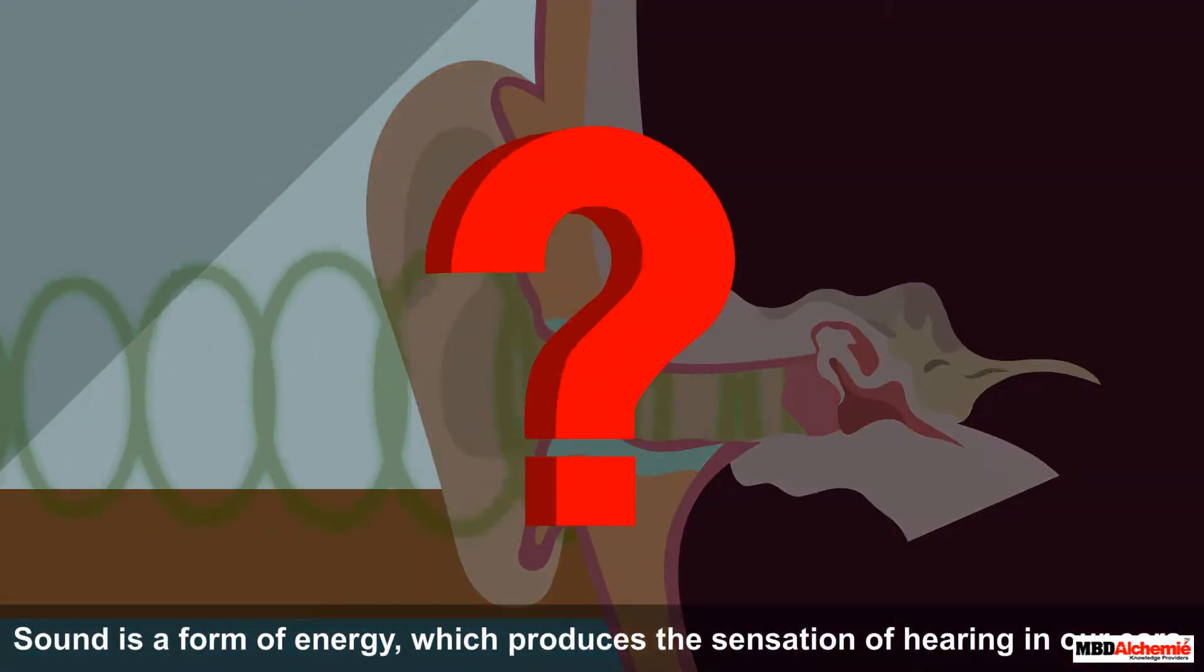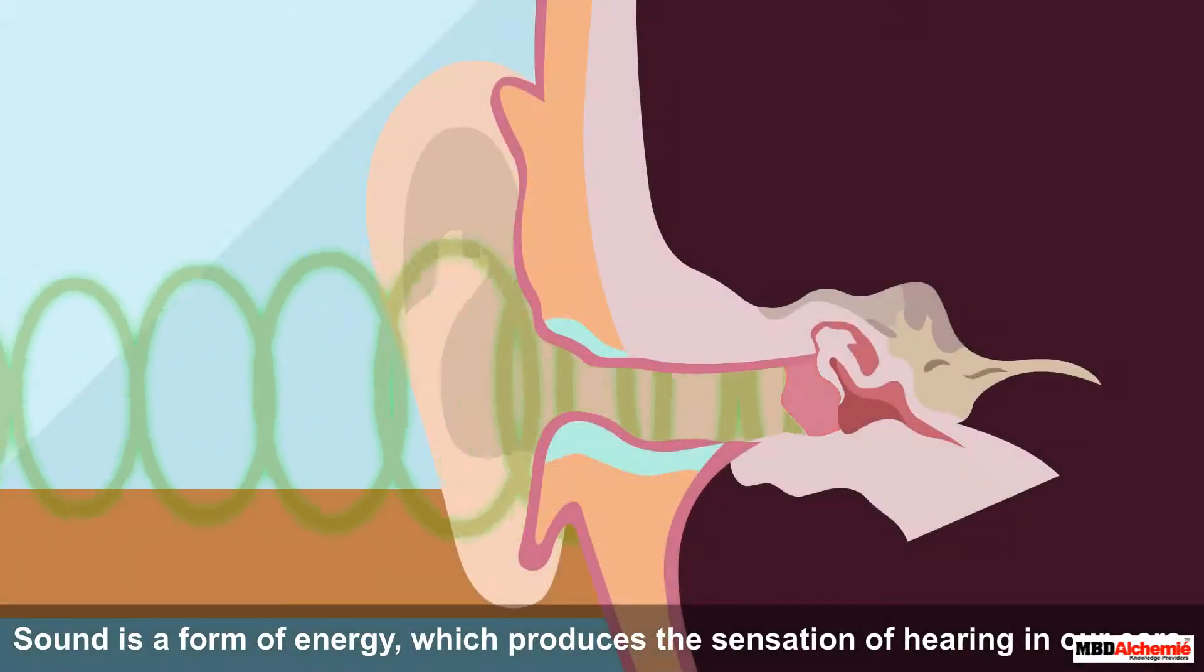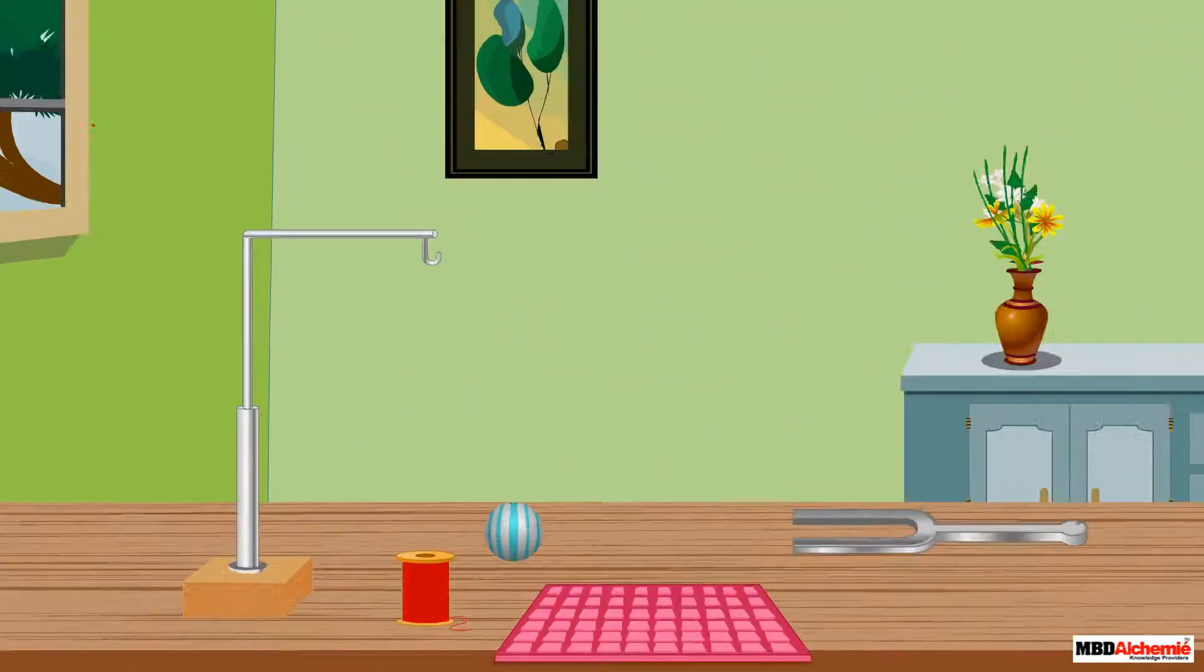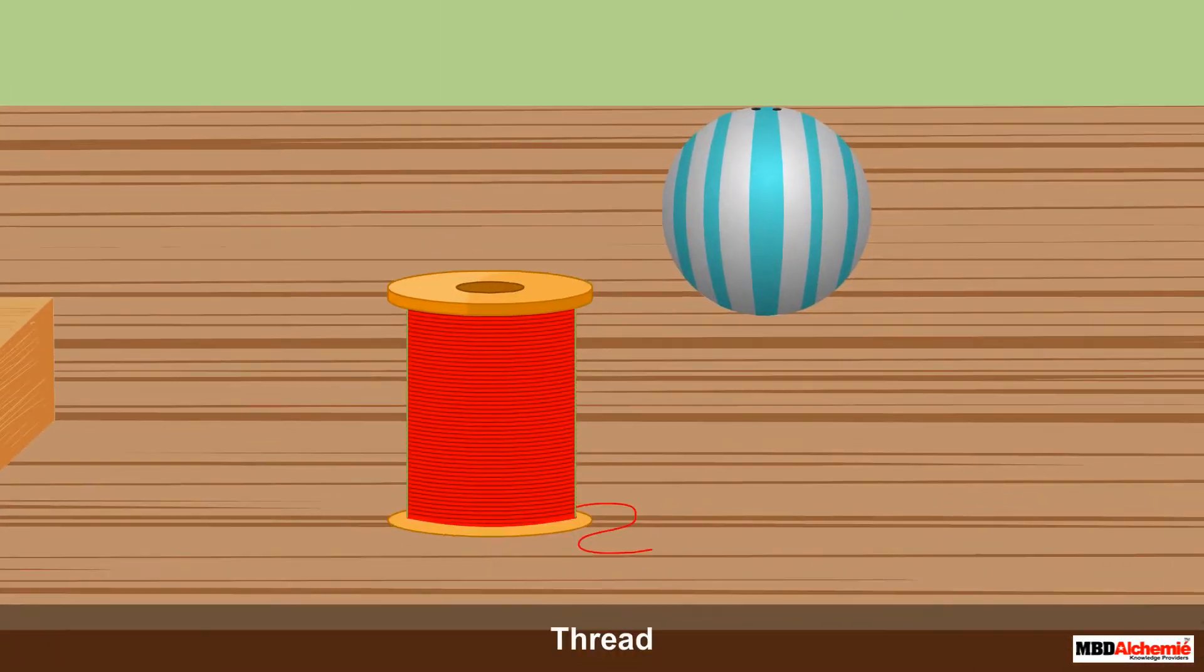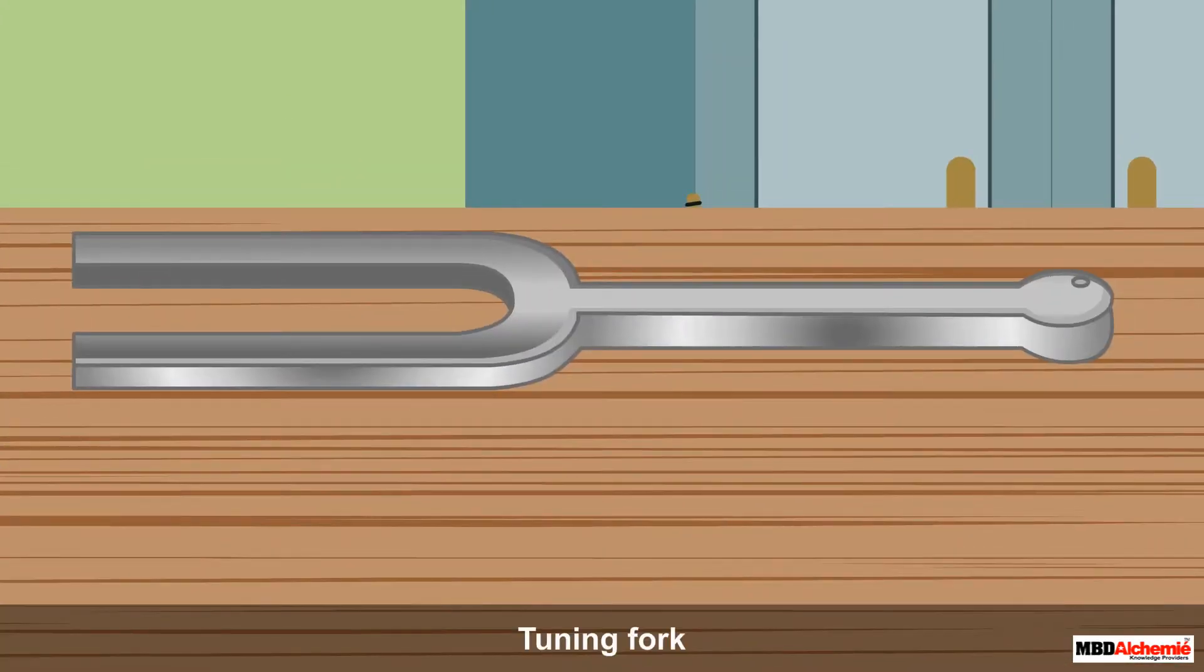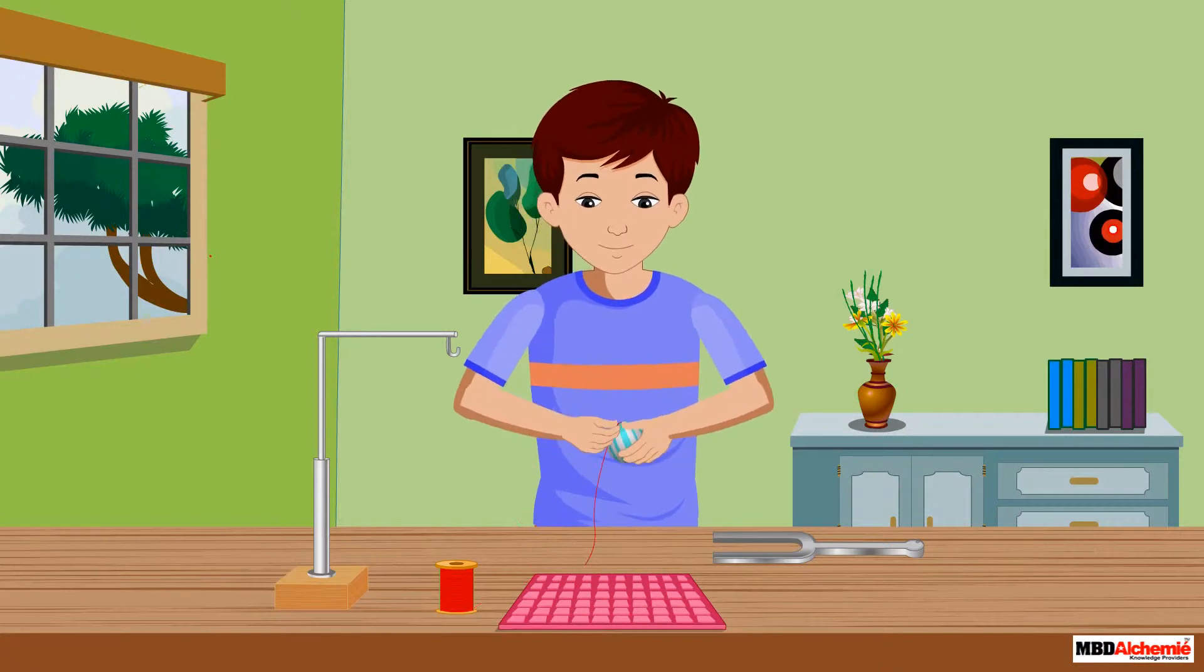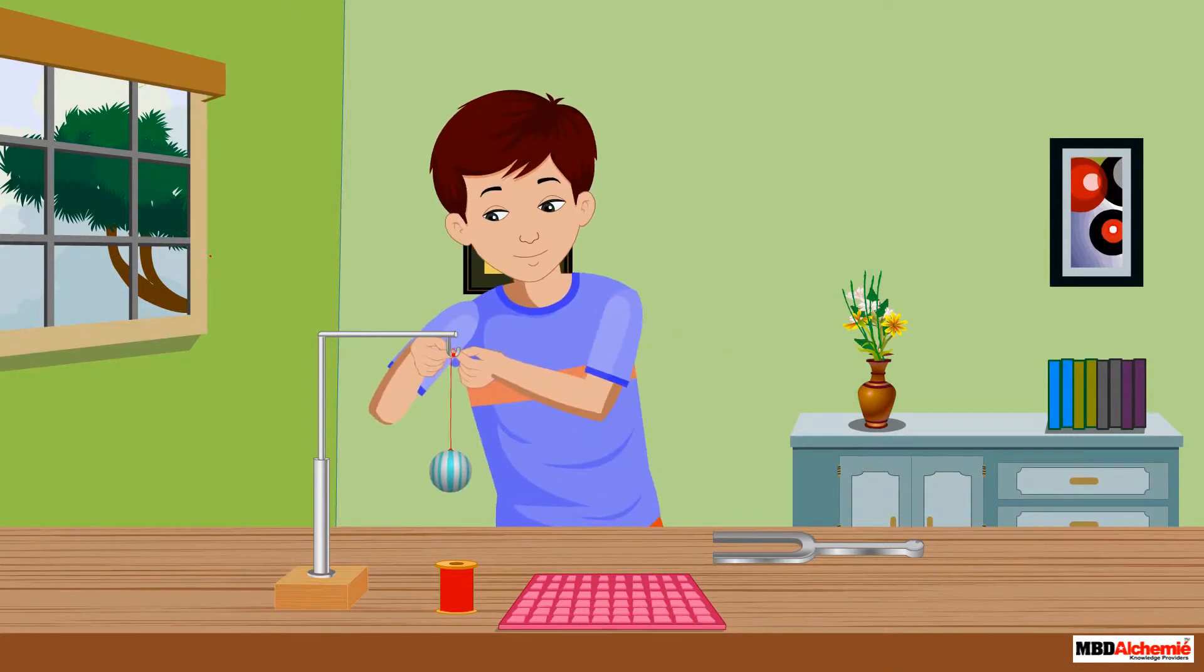Do you know how sound is produced? Let us understand this with the help of an activity. For this, you need a small plastic ball, a thread, a tuning fork, and a rubber pad.